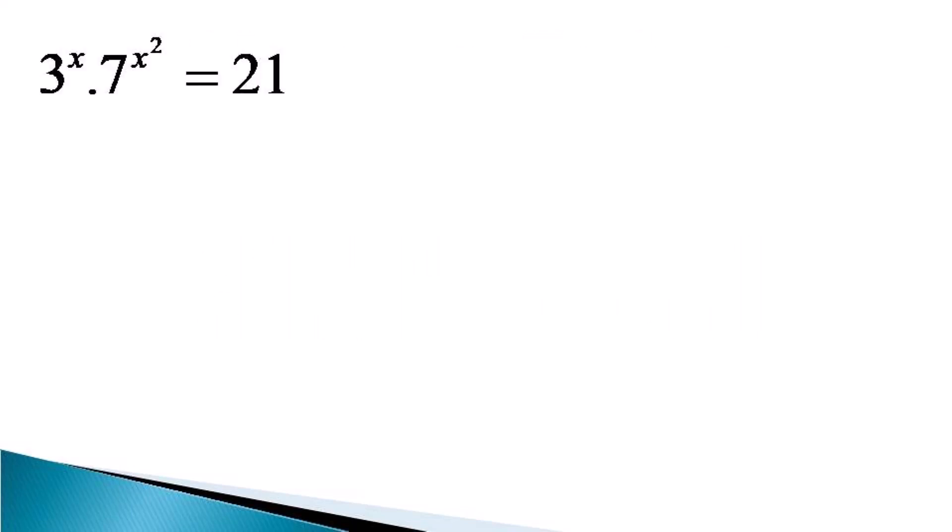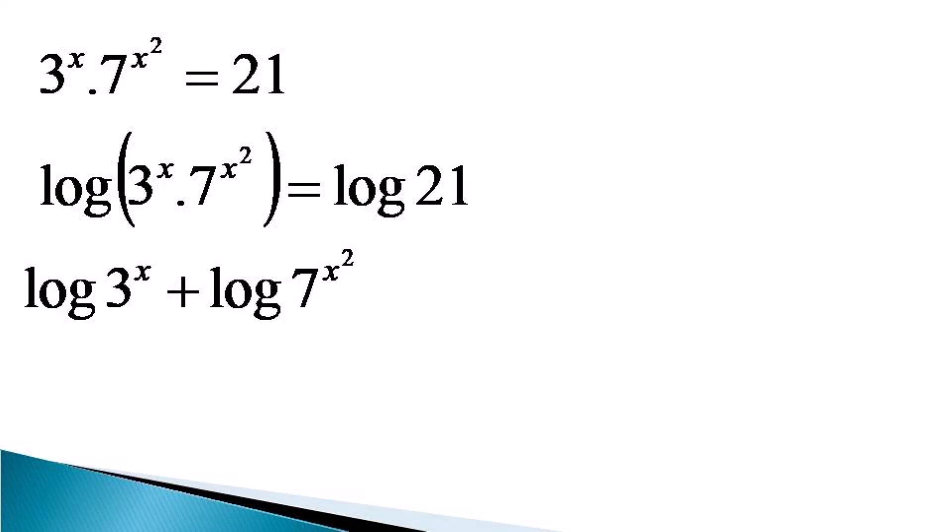To solve this equation, first we take log of both the sides and then on the left hand side we make use of the multiplication property of log and it becomes log of 3 raised to the power x plus log of 7 raised to the power x square. On the right hand side we represent 21 as 3 into 7 making it equal to log of 3 into 7.